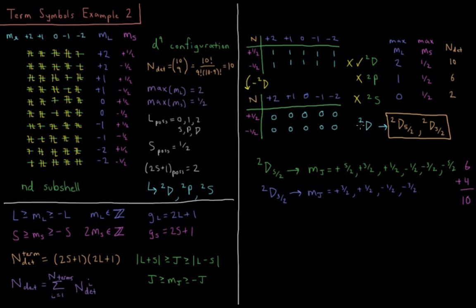Lastly, we add the possible values of J to the doublet D term symbol. J goes from |L+S| to |L-S|. For D, L = 2, and for doublet, S = 1/2. So J ranges from 5/2 down to 3/2 in half-integer steps. Our final term symbols are doublet D 5/2 and doublet D 3/2.